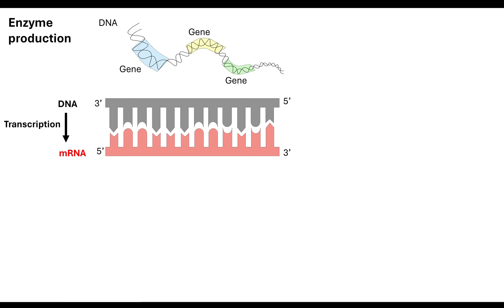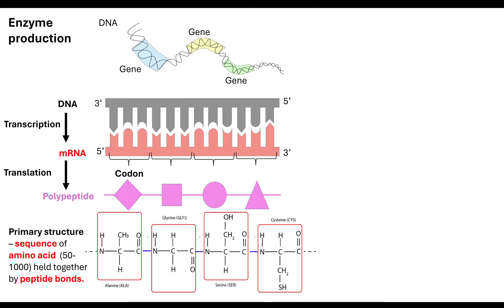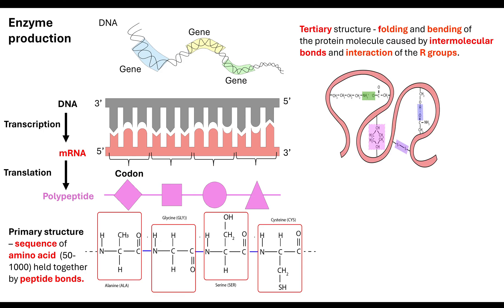Your genes need to be transcribed onto mRNA, so the DNA-based sequence gets copied to an mRNA-based sequence. That will be read in its triplets, known as codons. The codons get translated into the amino acids, and that forms your polypeptide. Your primary structure — that sequence of amino acids — is held together by peptide bonds, and they later result in the tertiary structure: the folding and bending of the protein because of intermolecular bonds and interactions of those R groups.